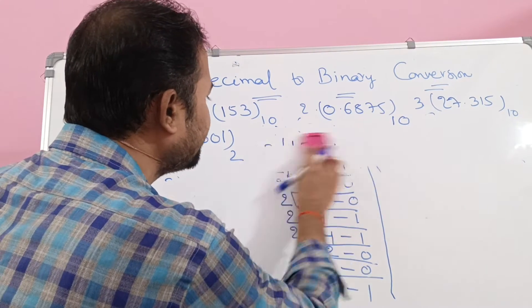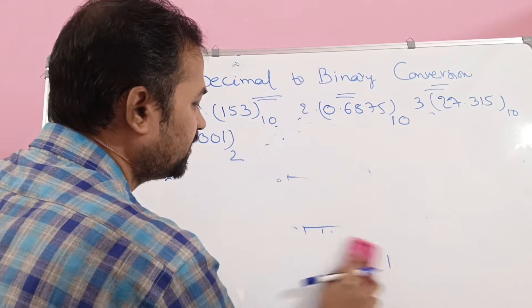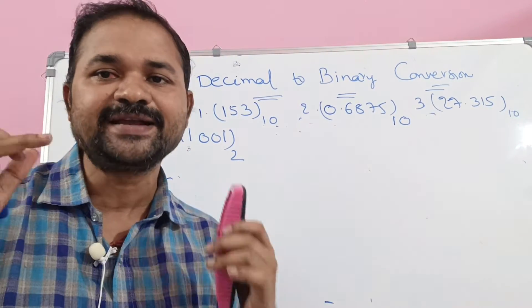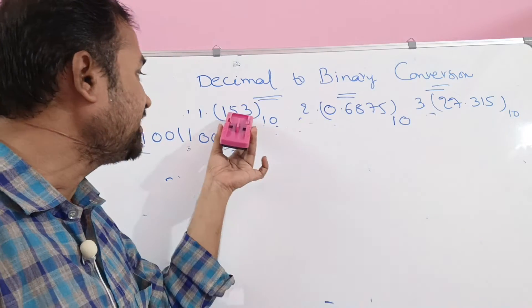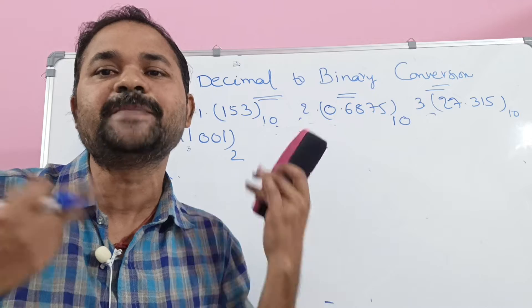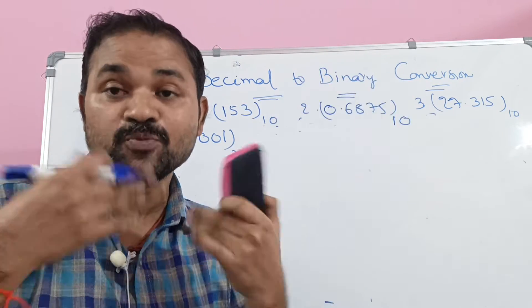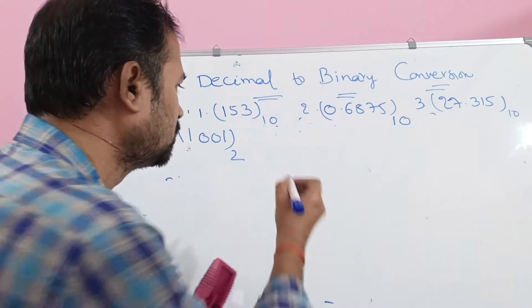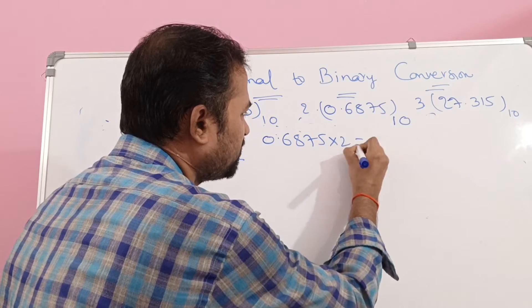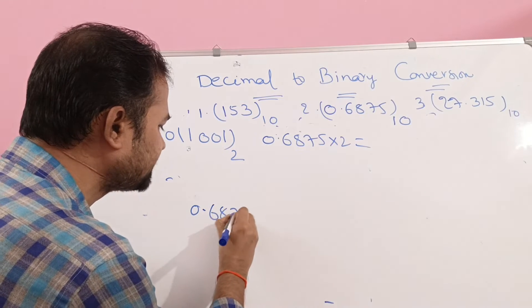Now let us solve the second example. In the second example, we have only a fractional part. If we have a fractional part, then we have to multiply that number by 2. So 0.6875 multiplied by 2: adding those values gives 1.3750.